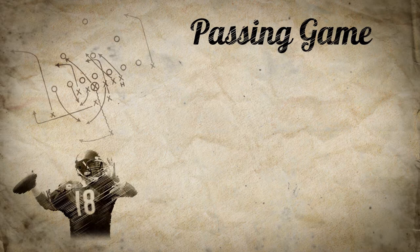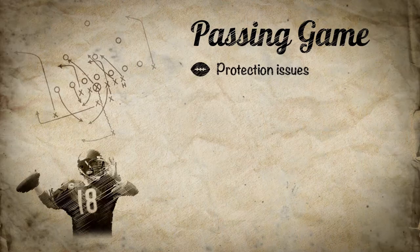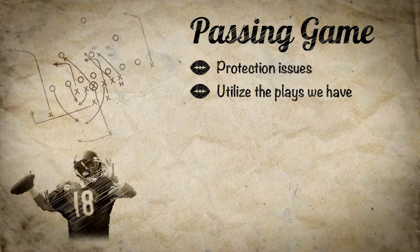In the passing game it starts with protection. Number one is what are the things they're going to do that are going to cause us protection issues, and we take care of that first. That's critically most important — our quarterback has to know in the passing game, because he is defenseless, that he's going to be protected. Then we utilize the plays we have to see how they fit against the coverages and the things that they do.